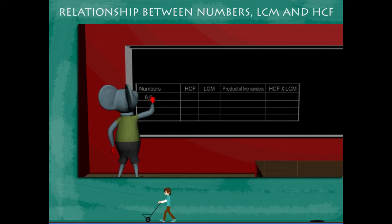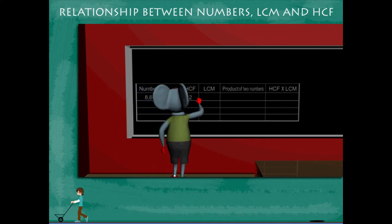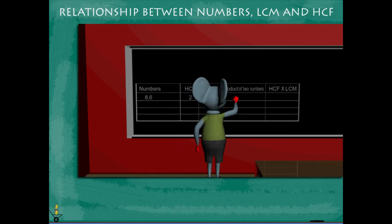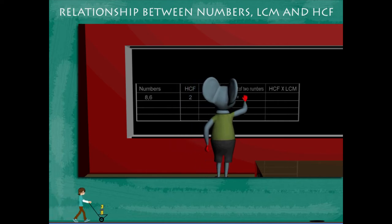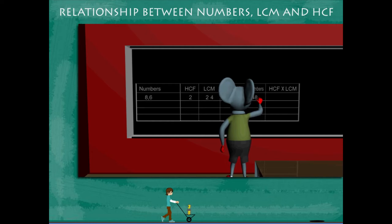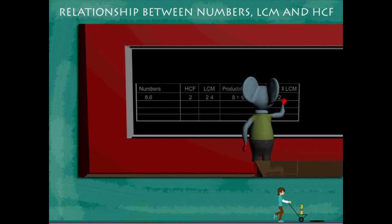Toby writes the numbers 8 and 6. The HCF is 2 and the LCM is 24. The product of the two numbers 8 and 6 is 48 and the product of HCF and LCM 2 into 24 is also 48.